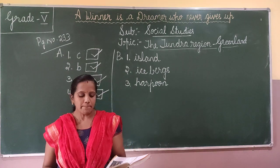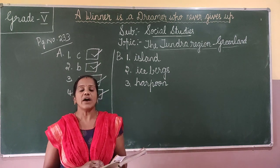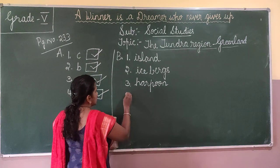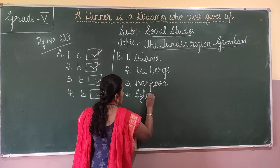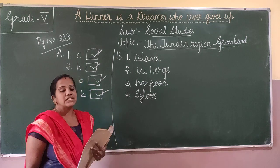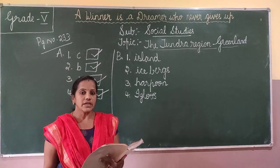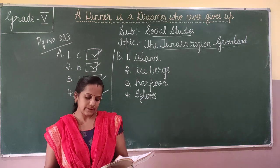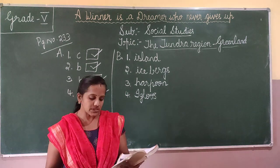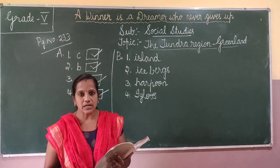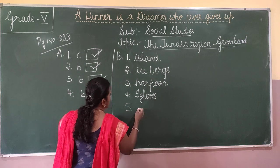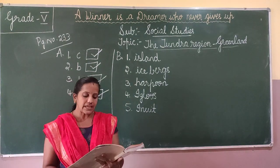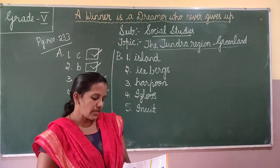Fourth blank: temporary houses made by the Inuits using blocks of ice are called igloos — I-G-L-O-O-S. During winter, the Inuits live in igloos, which are temporary houses made using blocks of ice. Fifth blank: people of Greenland prefer themselves to be called Inuit — I-N-U-I-T.